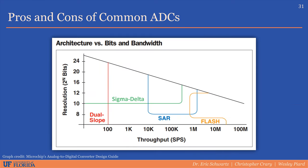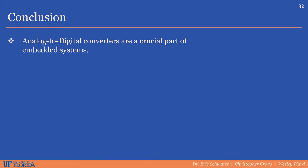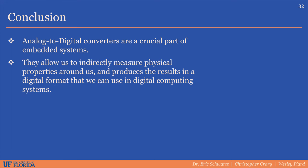A graph shows throughput capabilities of each ADC type with respect to resolution. Dual-slope ADCs are normally slow but can be extremely accurate when implemented correctly. Flash ADCs have extremely high throughput but resolution is limited by hardware requirements. Sigma-delta and successive approximation ADCs fall somewhere in the middle and spread throughout the range because they are very flexible. To conclude, analog-to-digital converters are a crucial part of embedded systems — they allow us to indirectly measure physical properties and produce results in a digital format usable by microcontrollers, microprocessors, or larger computers.